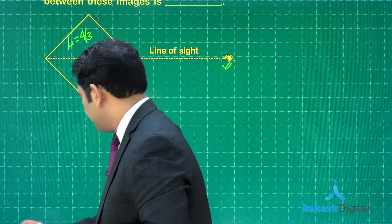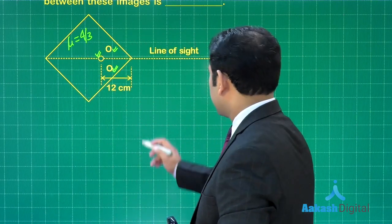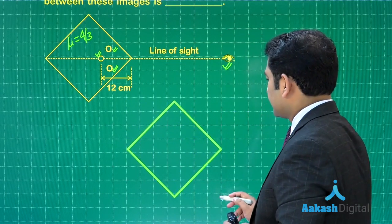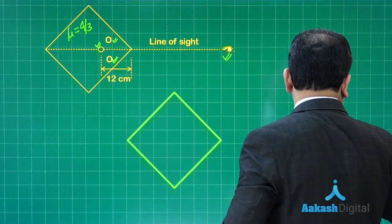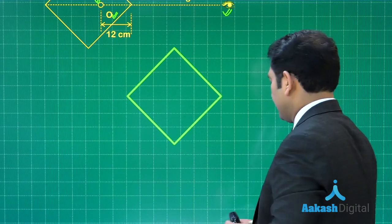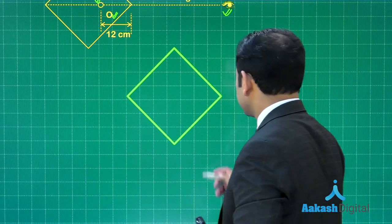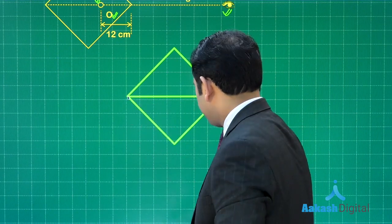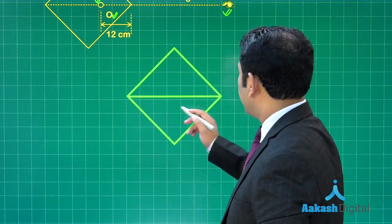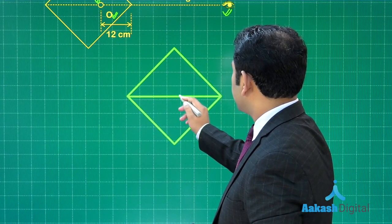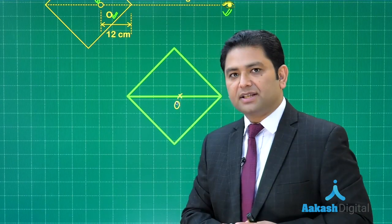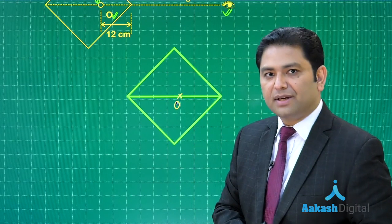Let me redraw the figure and scale it up so we can have a nice view. Here is the square. Lots of things are involved, so we need to go very patiently step by step. Here is the object.